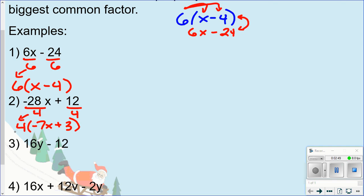If you want to check it, you could multiply the 4 back in and you should end up right back where you started. So basically, do the distributive property on your answer and it should take you right back to where you began.